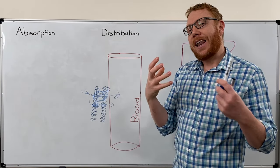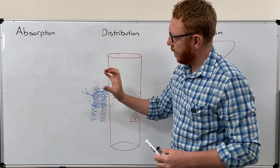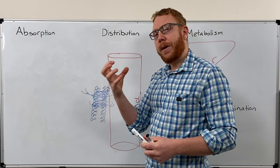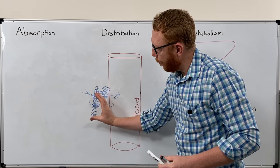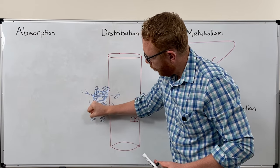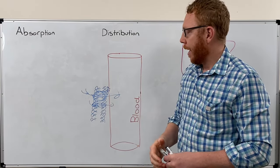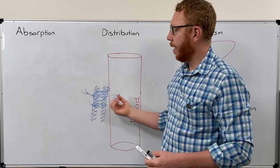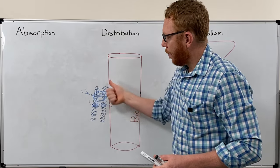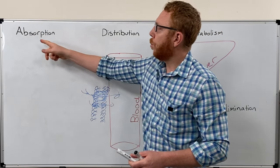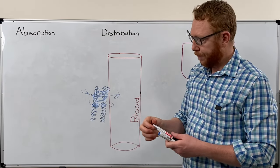And then lastly, we have endocytosis, which is for a really big drug molecule where the membrane has to engulf it, bring it in, and then pop it through. That's the biggest type of transport. These types of transport will affect the absorption of the drug.